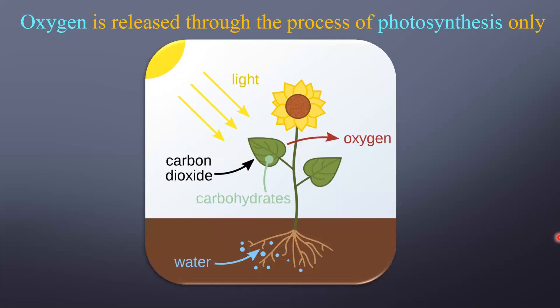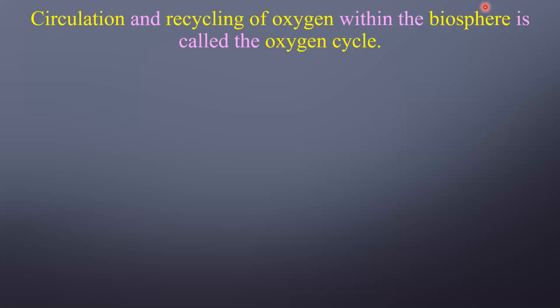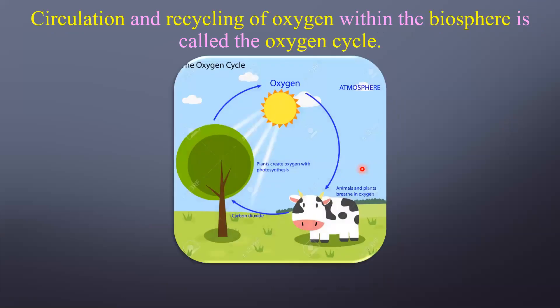Oxygen is released through the process of photosynthesis only. So to complete the cycle, we used oxygen through four processes but we give it back through only one process — photosynthesis. The plant takes in carbon dioxide and releases oxygen. The circulation and recycling of oxygen within the biosphere is called the oxygen cycle.